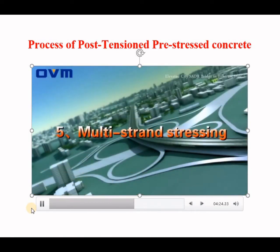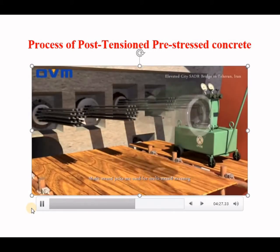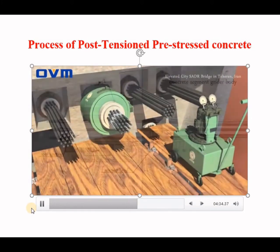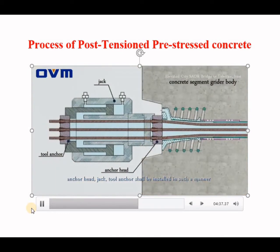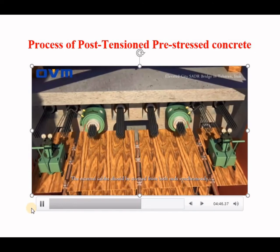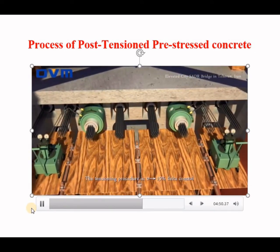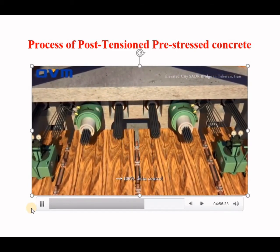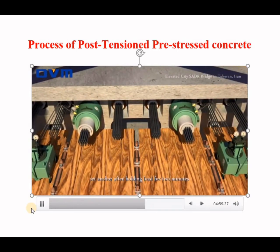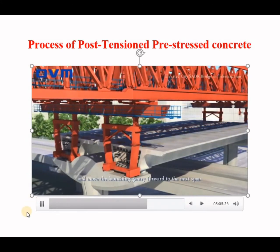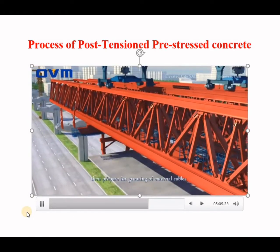For multi-strand stressing, multi-strand jacks are used. The anchor head, jack, and tool anchor shall be installed tightly with the shafts. The external cable should be stressed from both ends synchronously. The tensioning procedure is 0 to 15% delta control, to 30% delta control, to 100% delta control. Set anchor after holding load for 2 minutes. After stressing, remove temporary hanger rods of segments and move the launching gantry forward to the next span, then prepare for grouting of external cables.